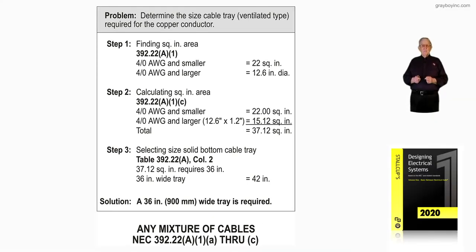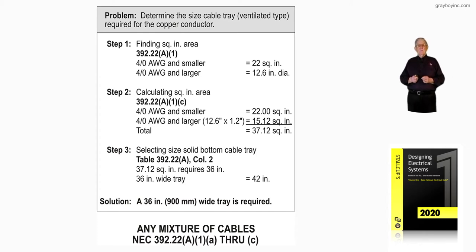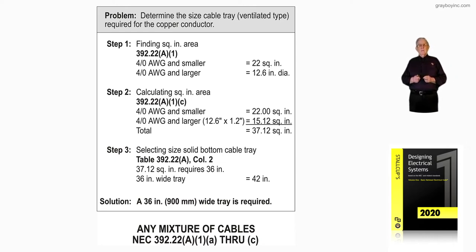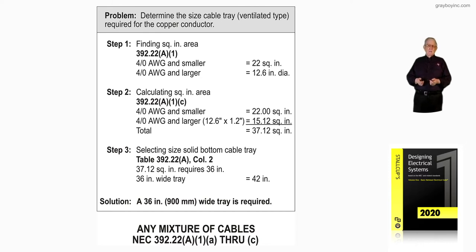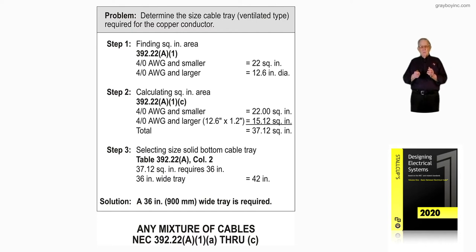This illustration shows the calculation of a mixture of cables in accordance with 392.22A1A to A1C. The problem is we want to determine the size of the cable tray — ventilated type. You have to know the type of cable tray: is it a ventilated bottom, ladder type, or is it a totally closed bottom? In this case, it's the ventilated type.